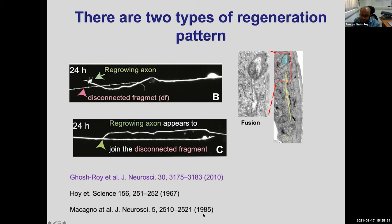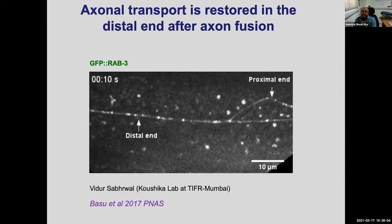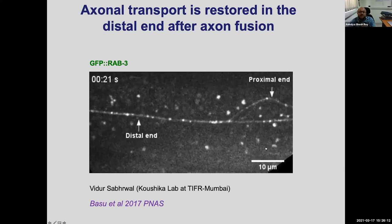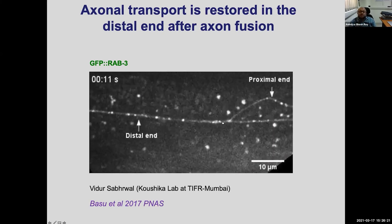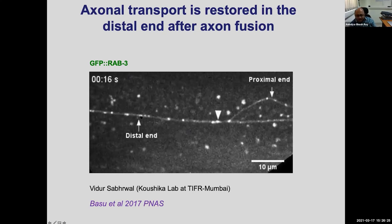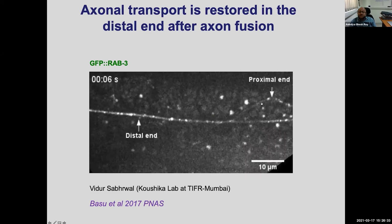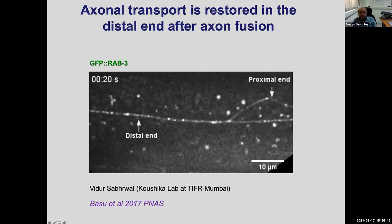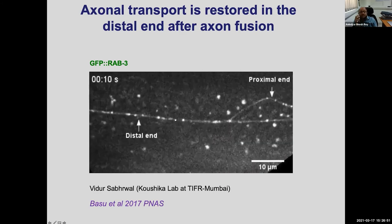To confirm this is true fusion and not just contact, in collaboration with Sandhya Koushika's lab we looked at synaptic protein RAB-3, which travels along axons. We photobleached the region to make it clearer. What you see is that the RAB-3 puncta move bi-directionally, and at the point of fusion, synaptic vesicles are transported right through the fusion point. This is direct proof—beyond electron microscopy—that axonal transport is restored at the fusion site. It is real fusion, not an artifact.